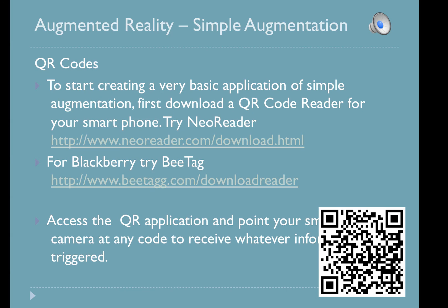To create a very simple QR code, first download a QR code reader. If you have an iPhone, try NeoReader. If you have a Blackberry, try Vtag. Once you have it downloaded, access the QR application and point your smartphone to any code to see what information is triggered.